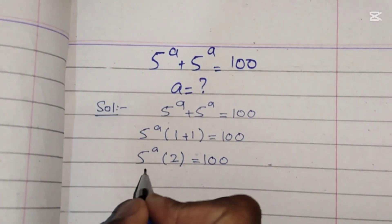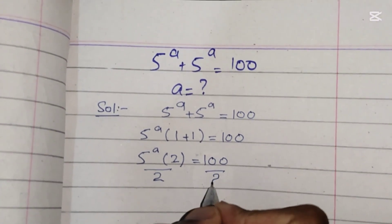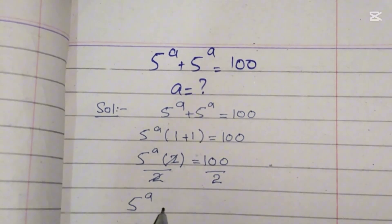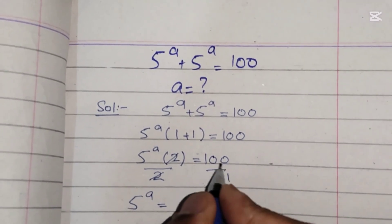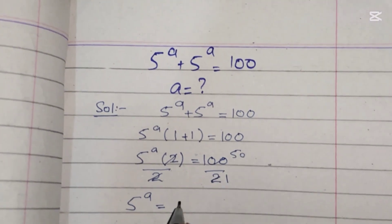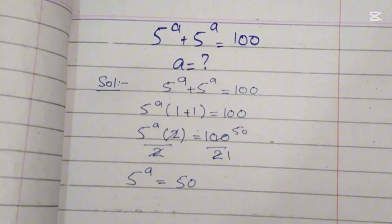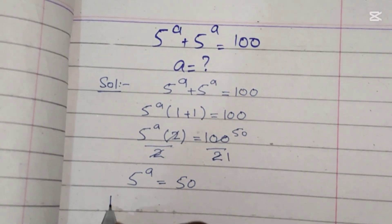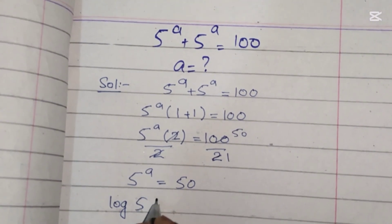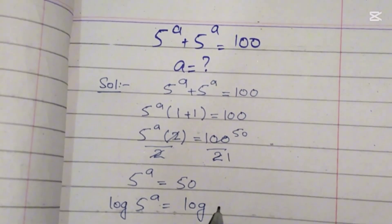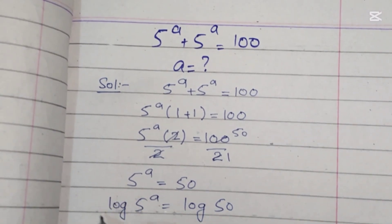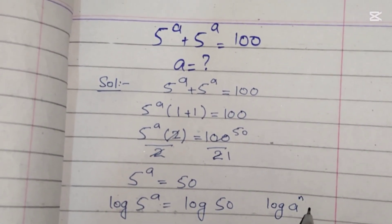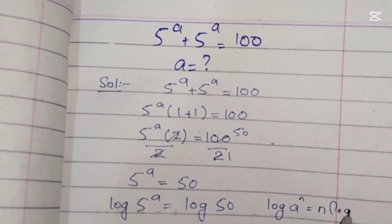Now to get only a on the left side, we will divide both sides by 2. 2 cancels with 2, and we get 5 power a equals 50. Now we will take log on both sides — log base 10 of 5 power a equals log of 50.